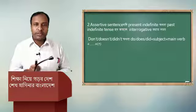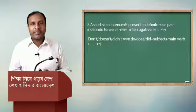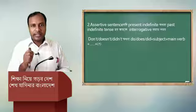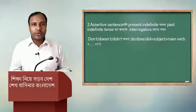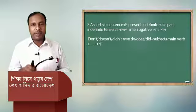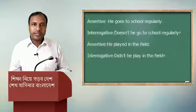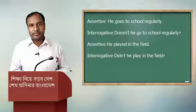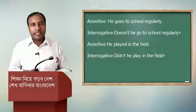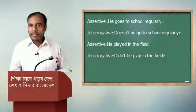Point two: if an assertive sentence is in present indefinite or past indefinite tense, then when making it interrogative, use do not / does not / did not, or do / does / did + subject + verb + ... + question mark. For example: 'He goes to school regularly.' The interrogative will be: 'Doesn't he go to school regularly?' Another example: 'He played in the field.' The interrogative will be: 'Did not he play in the field?'